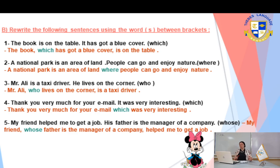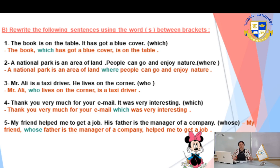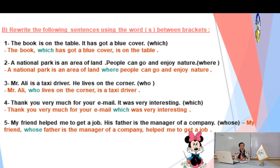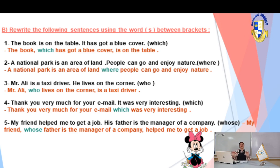The second question: 'A national park is an area of land. People can go and enjoy nature.' Here there is no personal pronoun referring to the same noun, so we use 'where' to join the two sentences. The answer is: 'A national park is an area of land where people can go and enjoy nature.' It's so easy.